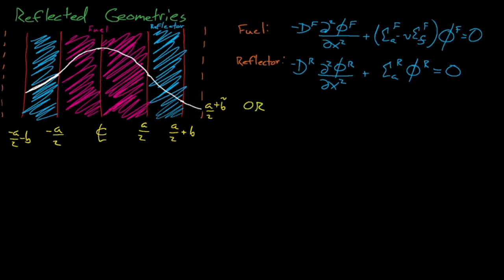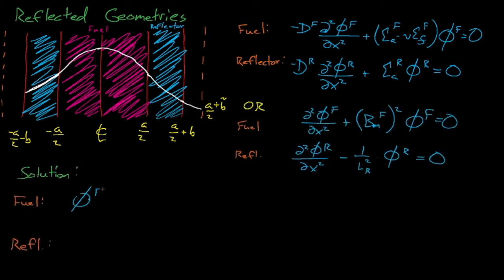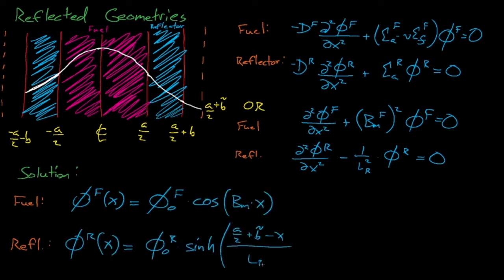We can consider the two diffusion equations for the fuel and reflector regions, and we see that the flux in the fuel is once again given by this cosine function, whereas the flux in the reflector material is given by this hyperbolic sine term. Now, let's talk about the steps that we just skipped to get here by reviewing the boundary conditions that we impose on this system.